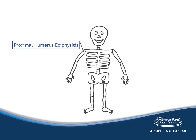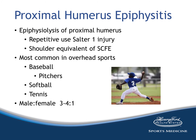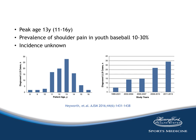Moving on to proximal humeral epiphysitis. This injury is an epiphysiolysis of the proximal humerus growth plate — basically a repetitive use Salter Type 1 injury, the shoulder equivalent of SCFE. Sometimes there is actual displacement; sometimes there is not. It is most commonly seen in overhead sports like baseball, softball, and tennis — in baseball, usually the pitchers. There is a male predominance of three or four to one. A 2016 study from Boston Children's Hospital in the American Journal of Sports Medicine by Hayworth and colleagues looked at trends in the presentation, management, and outcomes of proximal humeral epiphysitis, commonly called Little League shoulder.